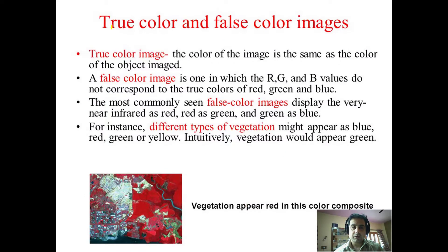Now what are true color and false color images? True color image - the color of the image is the same as the color of the object imaged. And false color is one in which the RGB values do not correspond to the true colors of red, green, and blue. And you can see the most commonly seen false color images display the very near infrared as red, red as green, and green as blue. So here you can see the vegetation appears red in this false color composite.